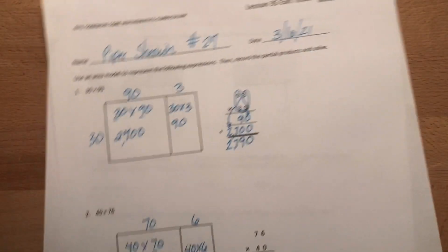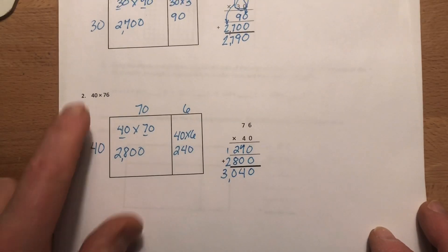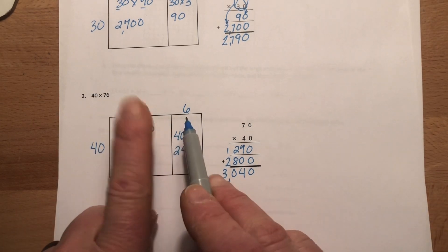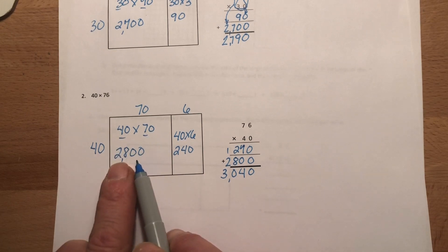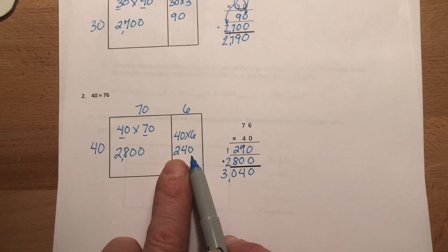And then, finally, down at the bottom here, let me get that brought up for you. 40 times 76. Remember, that 40 goes right here. So, we put that nice even 10. And we take the 76, and we split it into a 70 and a 6. 40 times 70 is 2,800. 40 times 6 is 240.